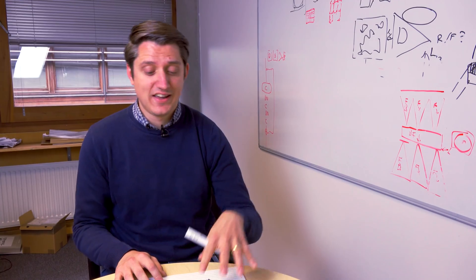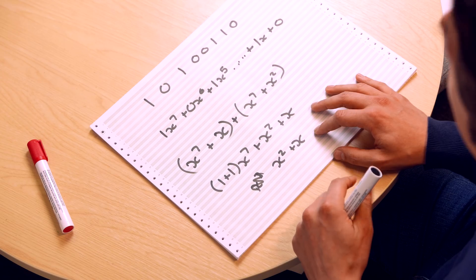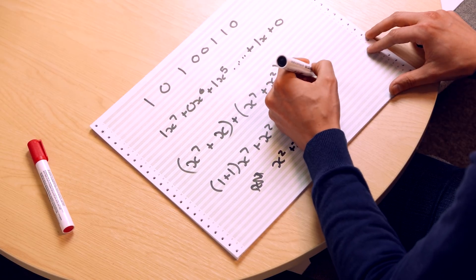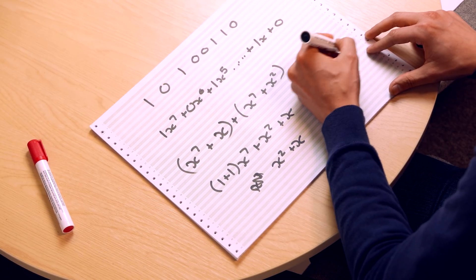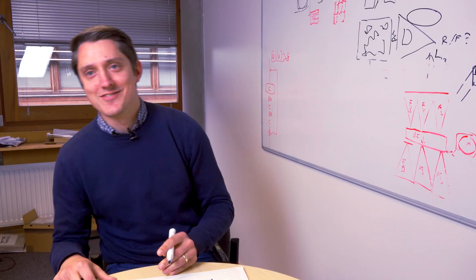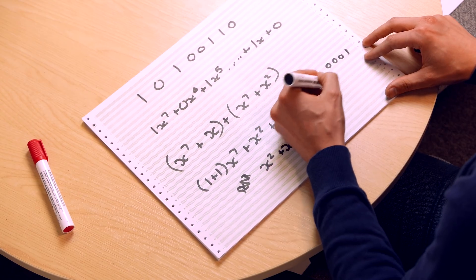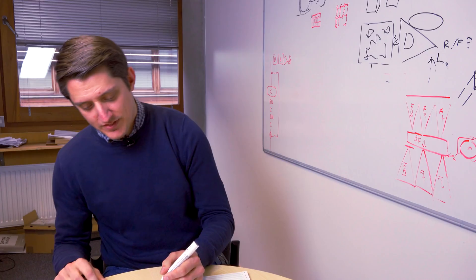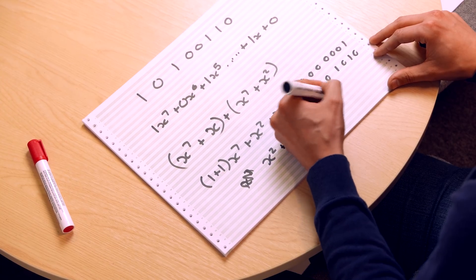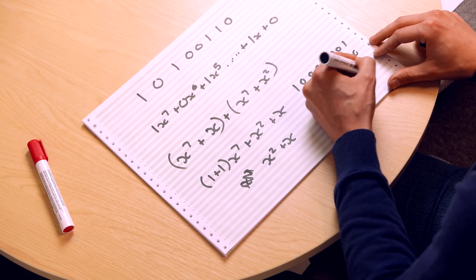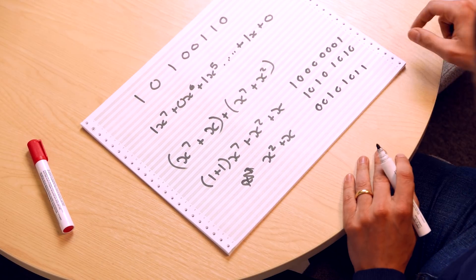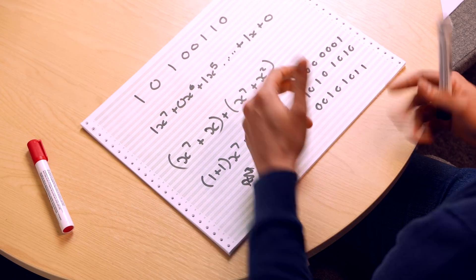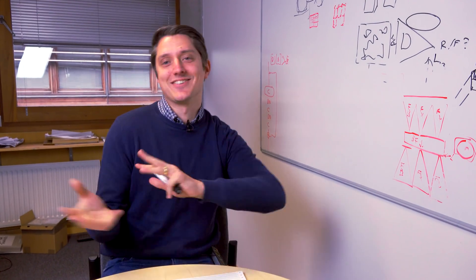Addition in this field is XOR. So for example, XOR-ing 1 0 0 0 0 0 0 1 with 1 0 1 0 1 0 1 0 — these are two elements in this field — gives 0 0 1 0 1 0 1 1. That's the answer, and it's the equivalent of doing polynomial addition. It's just that XOR saves a huge amount of time.